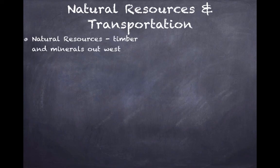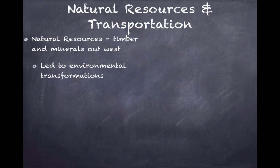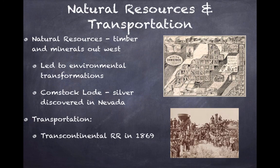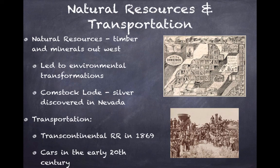For natural resources and transportation: things like timber and minerals out west were very valuable and needed for industrialization, leading to environmental transformation — entire forests were destroyed for timber. The Comstock Lode was a very popular silver mine discovered in Nevada, and many other places out west also had minerals. For transportation, the Transcontinental Railroad was completed in 1869, and in the early 20th century we'll see the development of the automobile, which became very popular under Henry Ford.